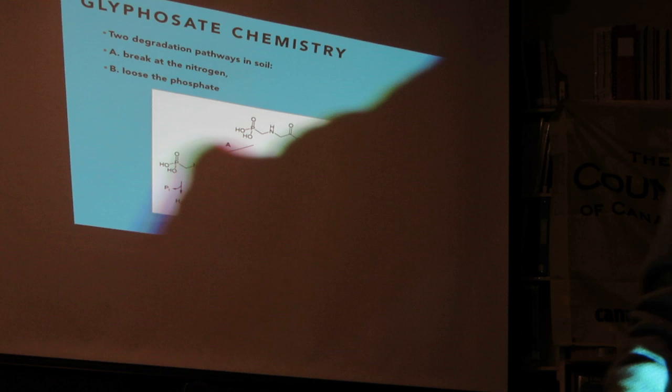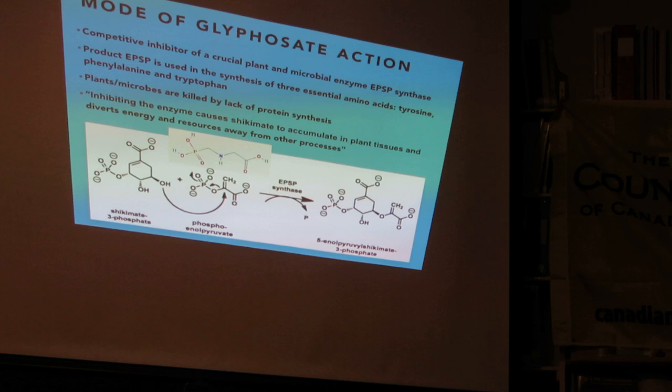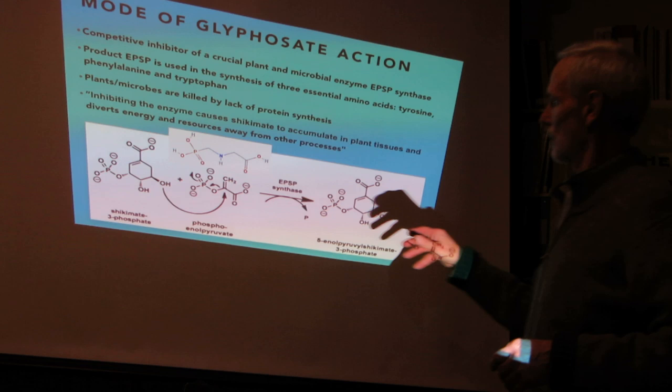The mode of action is really simple, and it's remarkable because this is why everybody seems to love this chemical — it only works on plants. This is called the shikimate pathway. Many years ago somebody discovered this pathway in plants — it's named after a Japanese flower — and it's called the shikimate pathway.